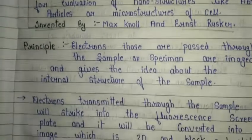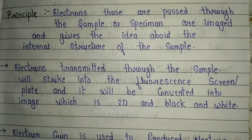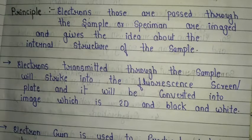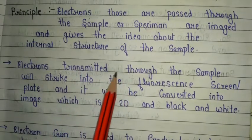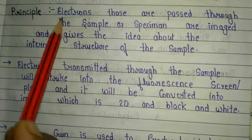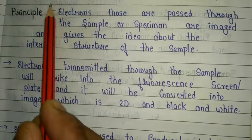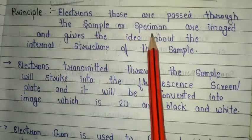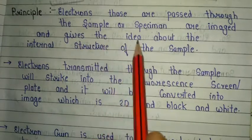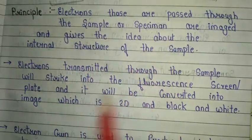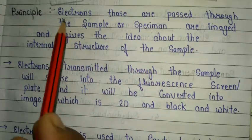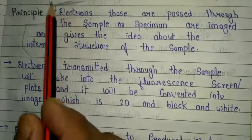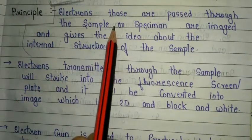Moving to the principle of TEM, the theory states that electrons passed through the sample or specimen are imaged and give information about the internal structure of the sample. This is a very important first point of the principle.